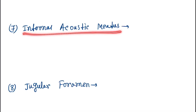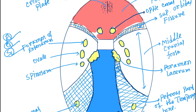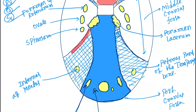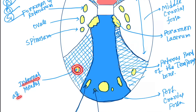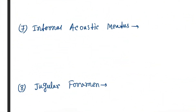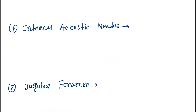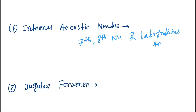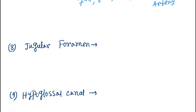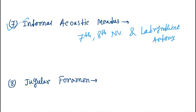Next is the internal acoustic meatus, present in the petrous part of the temporal bone. The structures passing through the internal acoustic meatus are the seventh and eighth cranial nerves, and the labyrinthine artery.